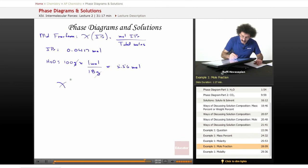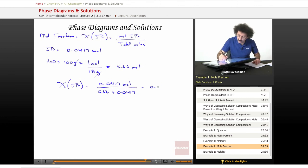Therefore our chi of isopropanol is equal to 0.0417 mole divided by 5.56 plus 0.0417. You end up with 0.0074. I hope you'll forgive me if I don't write 7.4 times 10 to the negative 3. I'm actually not a big fan of scientific notation myself. I prefer decimals. So that is the mole fraction.